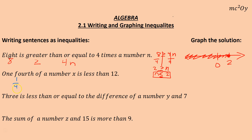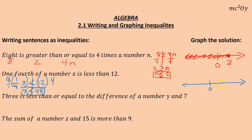One fourth of a number x is less than 12. To solve, multiply both sides by the common denominator, which is 4. Four times one fourth is 1 — the 4 cancels. So I get x is less than 12 times 4, which is 48. Drawing the number line, I put 0 and 48. There's no or equal to piece, so it's an open circle, and since it points left we shade to the left. If you put 0 in: 0 is less than 48 — true.